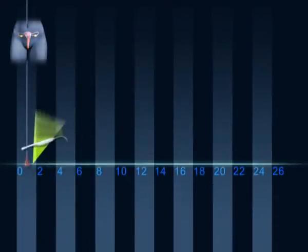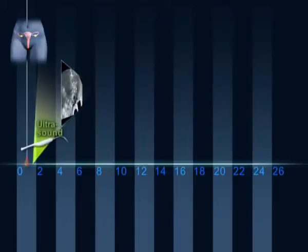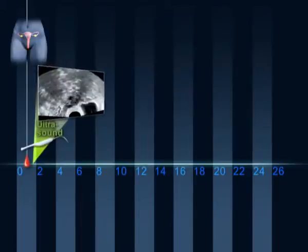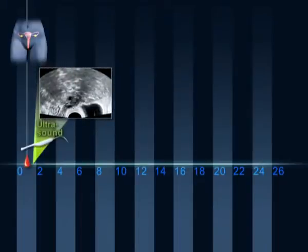In the first days of menstruation, a scan is done to check the thickening of the endometrium of the uterine cavity and to rule out the presence of cysts in the ovaries.